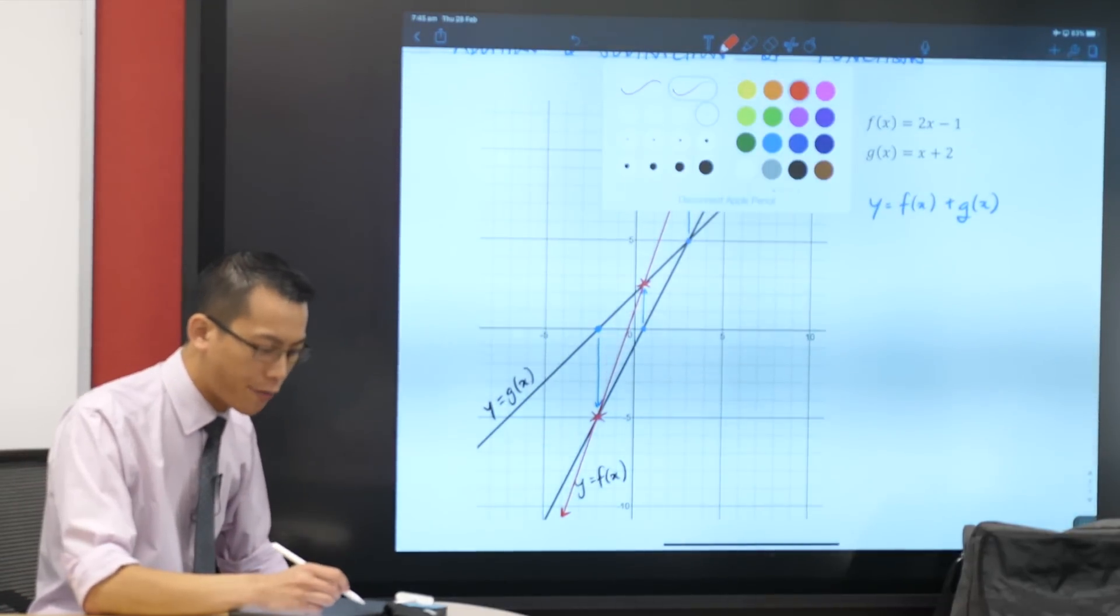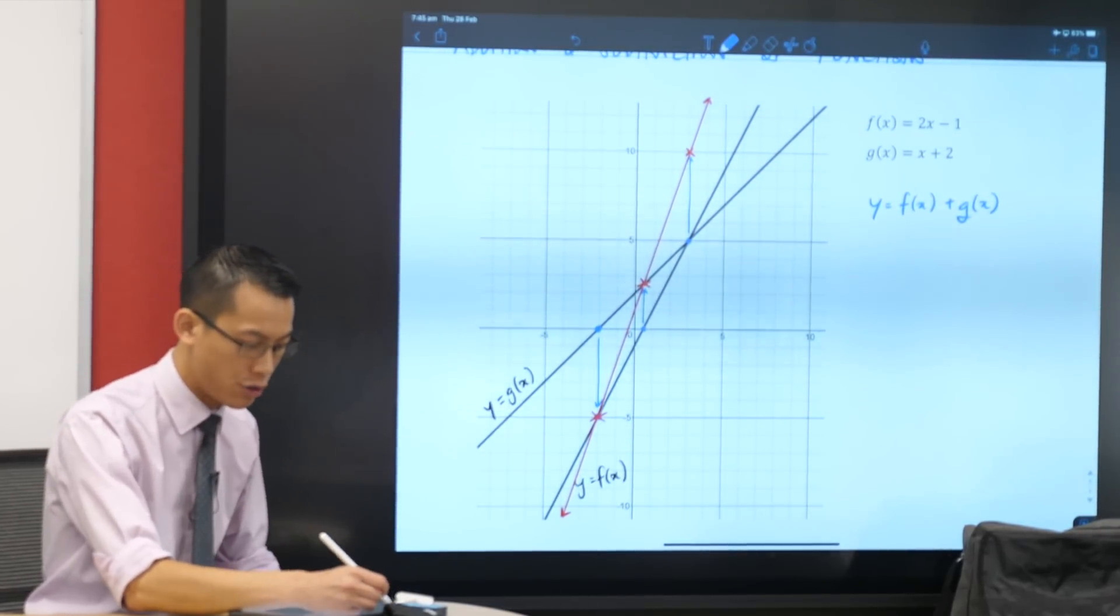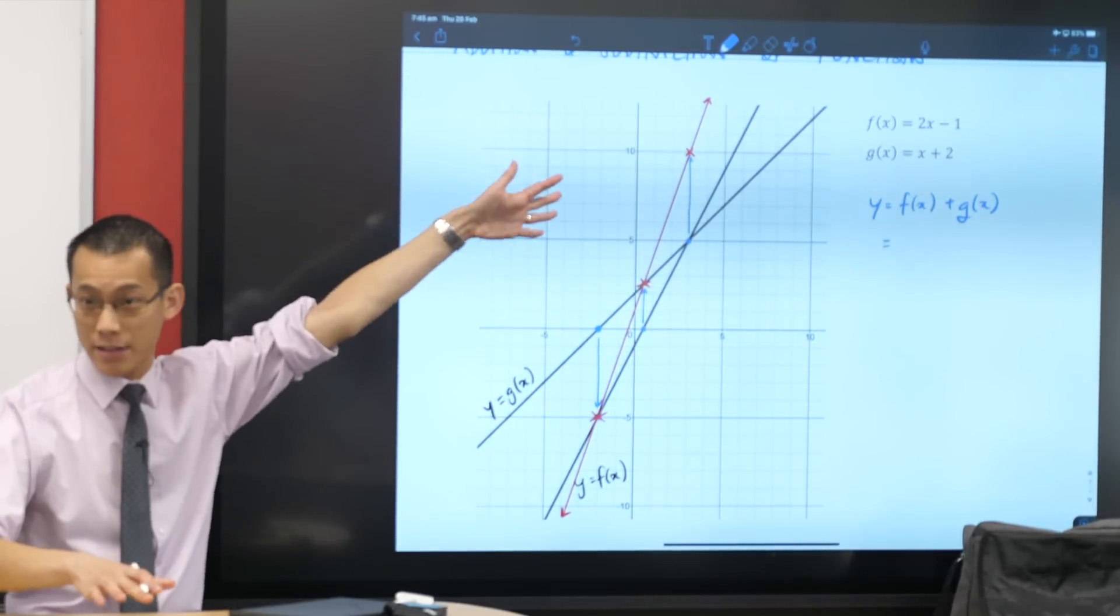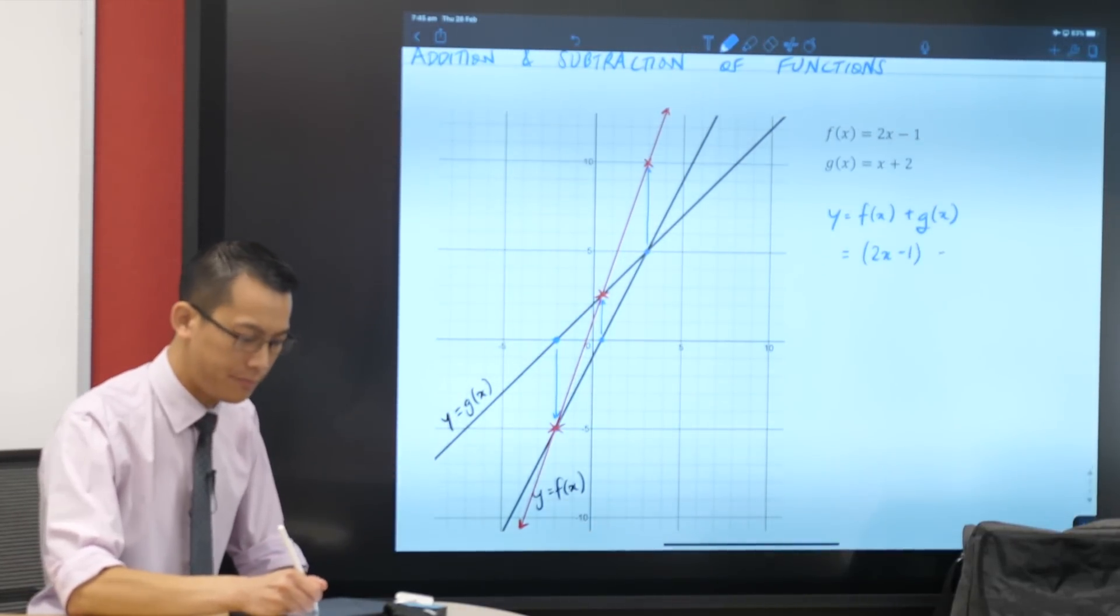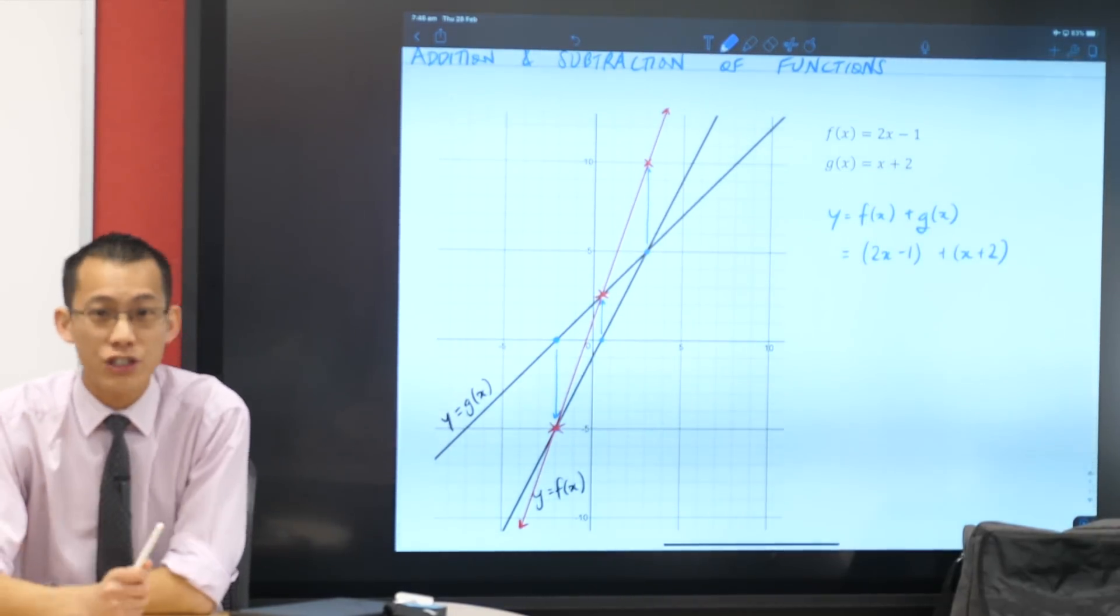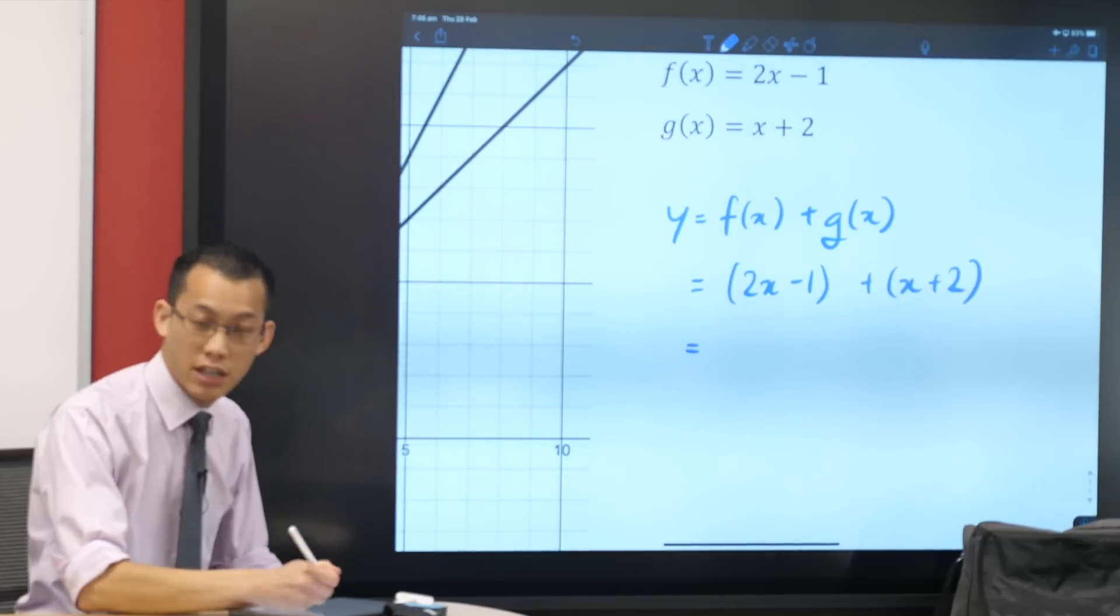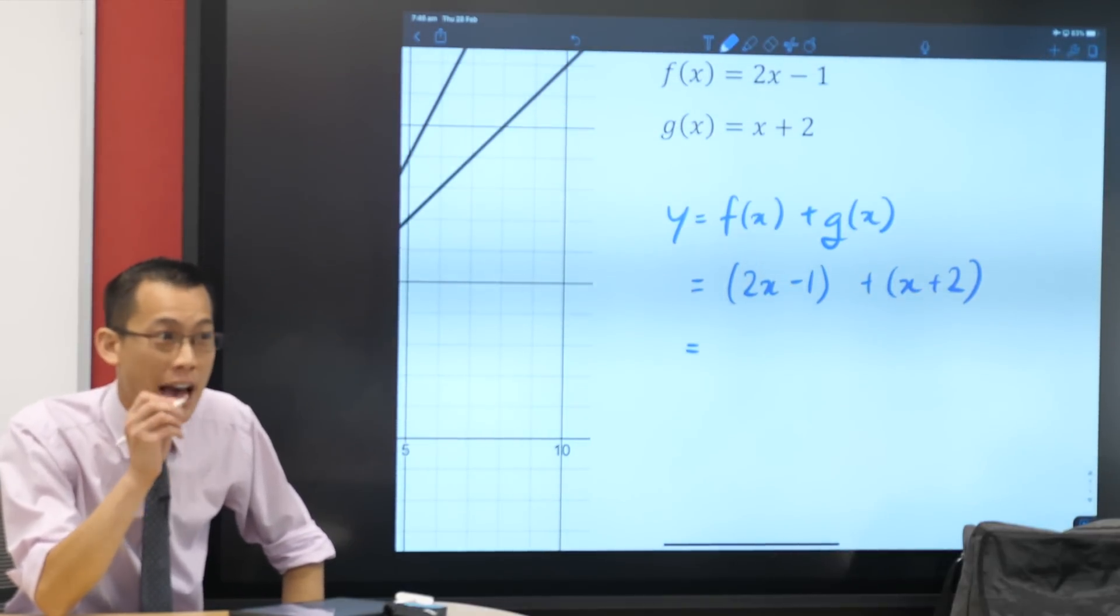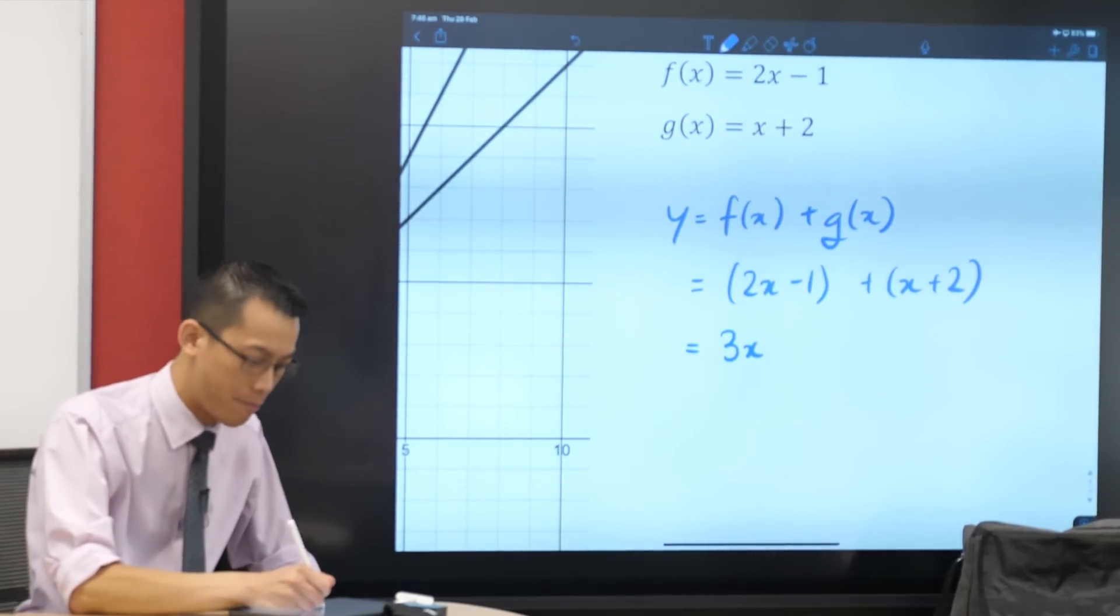Now what I can do is I can check to confirm is this actually going to work out for me. I'm going to use my algebra, which I already knew how to do before, to confirm whether my graph is accurate. What are f of x and g of x? They are 2x minus 1 and x plus 2. I'm not solving simultaneously here. I'm actually just adding these two functions together. I'm just going to collect some like terms here. How many x's are there? There are 3. 3x. And the minus 1 plus 2 gives me plus 1.